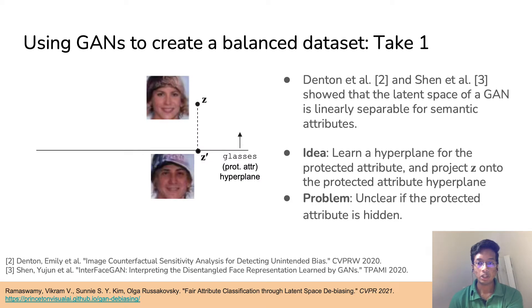An interesting observation made by Danton et al. and Chen et al. was that the latent space of a GAN is quite structured. In fact, most semantic attributes are approximately linearly separable in the latent space.